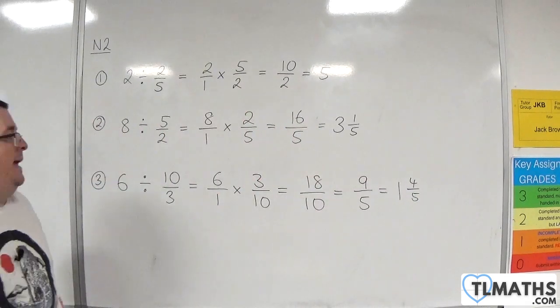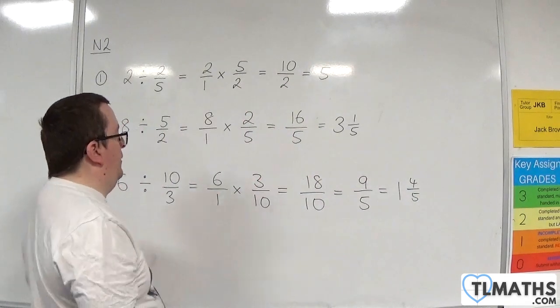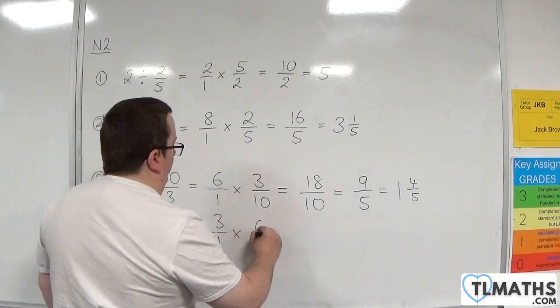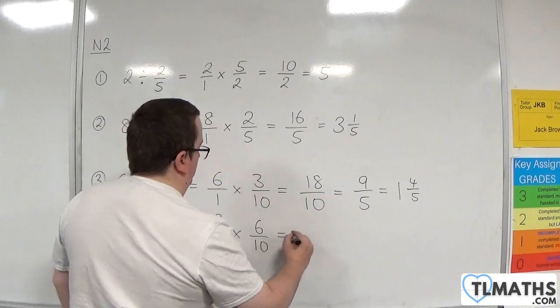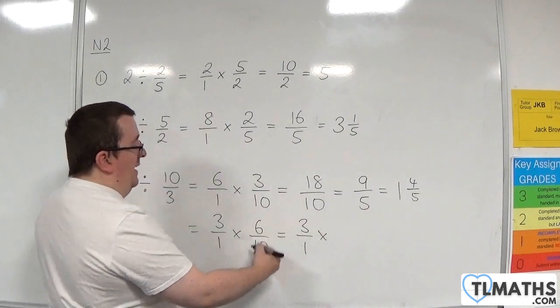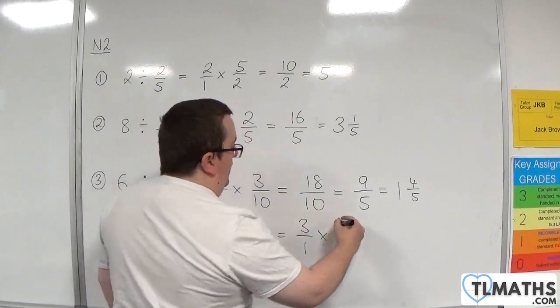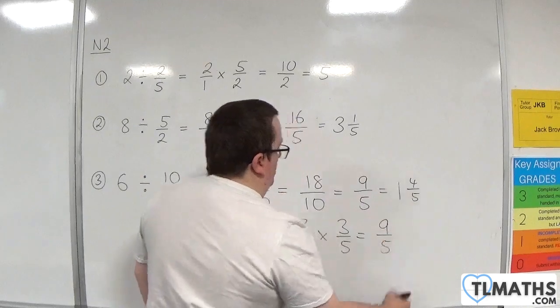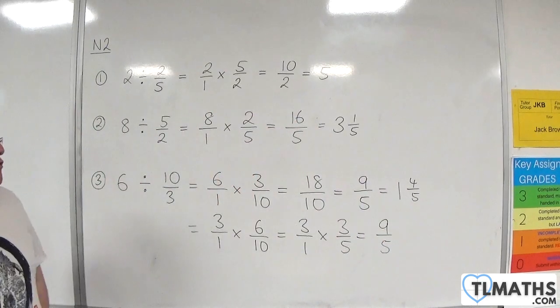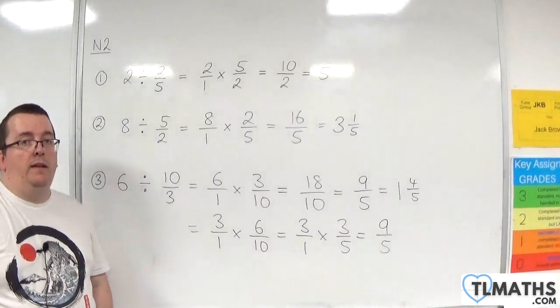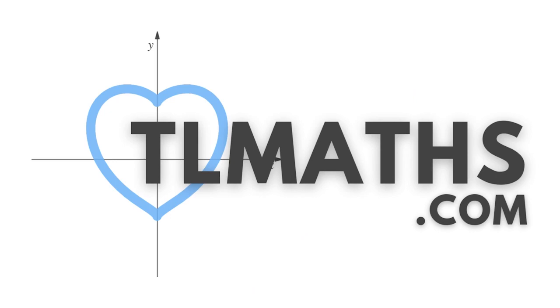Now again, you could at this stage have written this as 3 over 1 times 6 over 10. That's 3 over 1 times, simplifying that, 3 fifths. You get the 9 fifths. But you don't really make many gains doing it that way in that example, but it will work. There we go. Thank you.